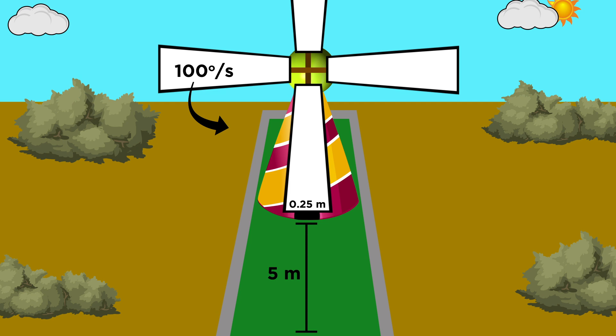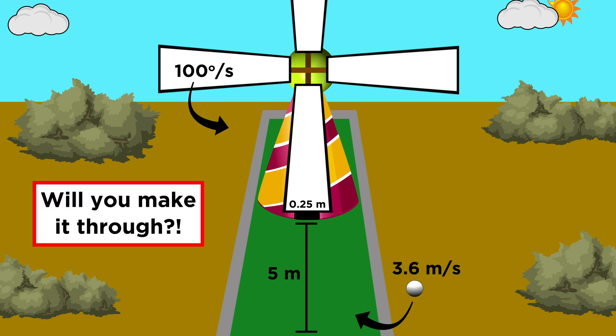You do a few calculations and decide that the optimum velocity for the ball will be three point six meters per second. If we consider the green to be frictionless, and the tunnel is precisely covered by one of the blades at the instant that you hit the ball, will you indeed make it through the obstacle unscathed?